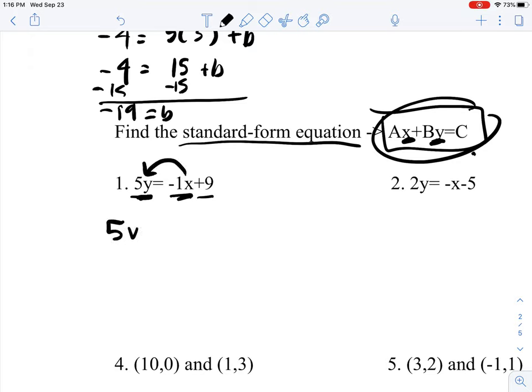So if we do x plus 5y equals 9, that's your standard form equation.